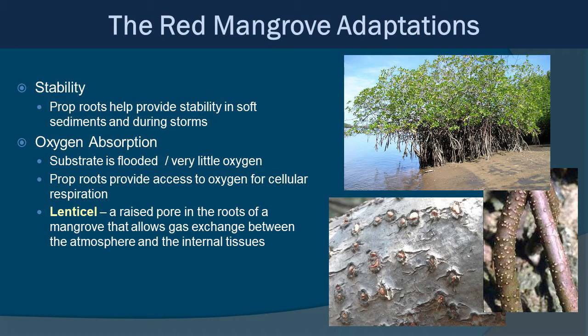Mangroves have a range of adaptations to help deal with saltwater environments. We'll primarily focus on red mangrove adaptations. Starting with stability — the prop roots help provide stability in the soft sediments. Mangroves live in protected, sheltered areas with a lot of sedimentation and sandy, muddy shores, so prop and drop roots really help stabilize them and in turn help stabilize the sediments as well. Oxygen absorption is another issue. The substrate is flooded and has very little oxygen, so the prop roots provide access to oxygen for cellular respiration through the formation of lenticels, which are raised pores in the roots that allow gas exchange between the atmosphere and the internal tissues.